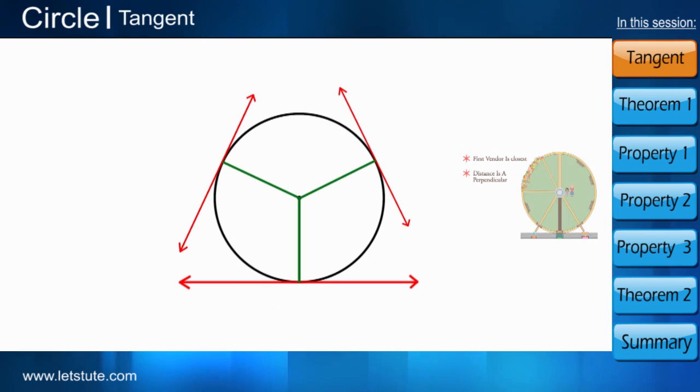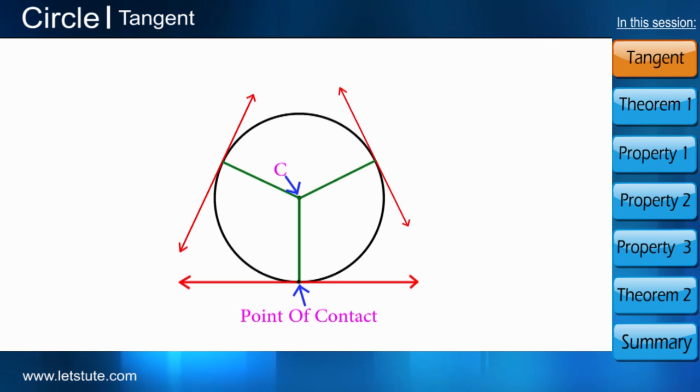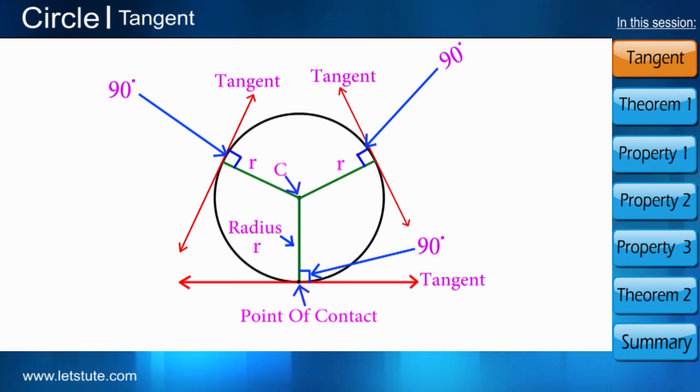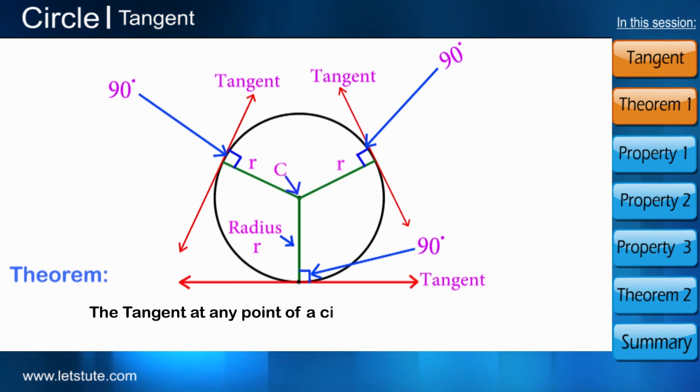Now if you draw radii from the center of the circle to the point of contact of the tangent, the radii will be perpendicular to the tangent. That is, radius and the tangent make an angle of 90 degrees always and that's what our first theorem says. The tangent at any point of a circle is perpendicular to the radius through the point of contact.